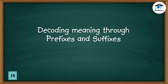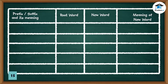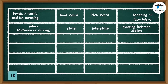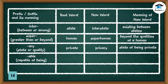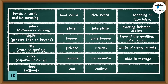Decoding meaning through prefixes and suffixes. 'Inter-' meaning between or among + root word 'state' = 'interstate,' meaning existing between or among states. 'Super-' meaning greater than or beyond + root word 'human' = 'superhuman,' meaning beyond the qualities of a human. '-acy' meaning state or quality + root word 'private' = 'privacy,' meaning state of being private. '-able' meaning capable of being + root word 'manage' = 'manageable,' meaning capable of being managed. '-less' meaning without + root word 'end' = 'endless,' meaning without end.